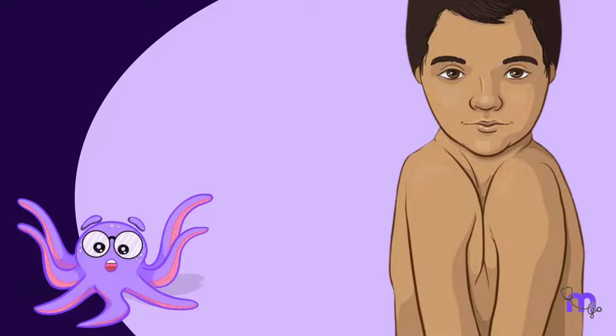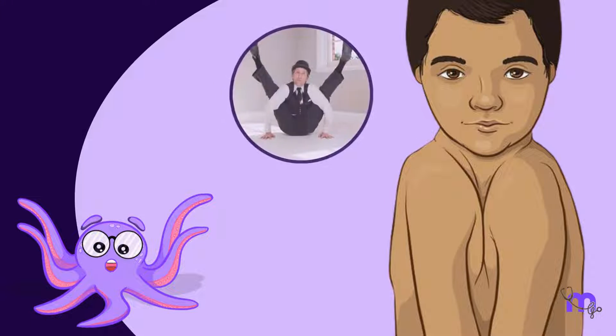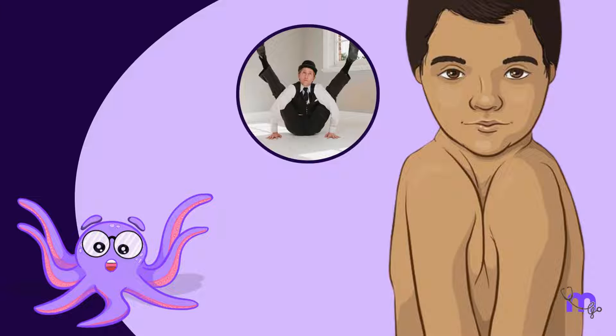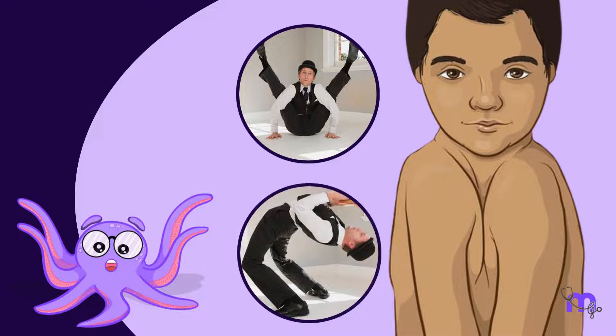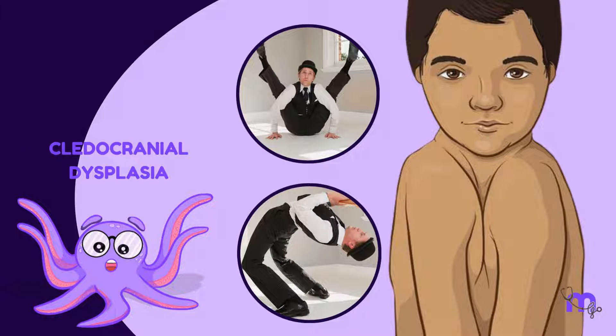Ever seen contortionists who can approximate their shoulders? Well, some are naturally flexible, while others have a condition called cleidocranial dysplasia.